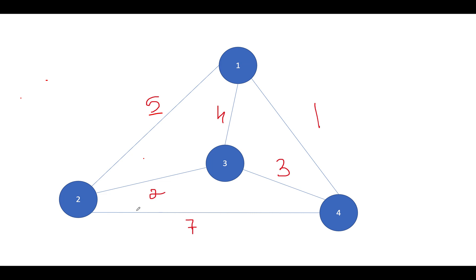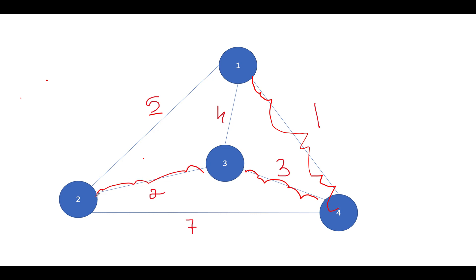The minimum spanning tree in this example would be: one connected to four, four connected to three, and three connected to two. The total length would be two plus three plus one, which is six units. All nodes — one, four, three, and two — get connected by this path.